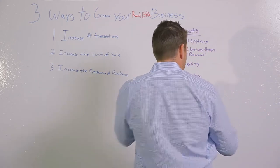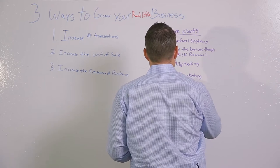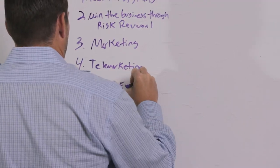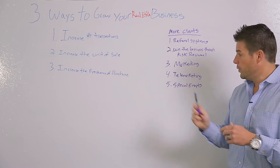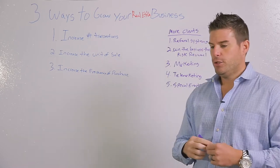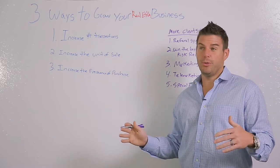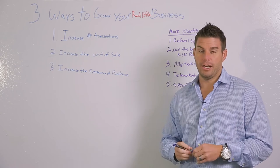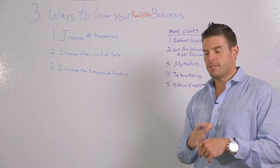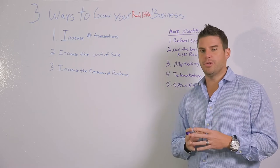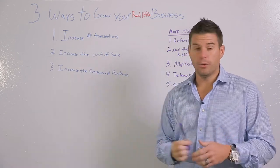The fifth way is special events. When it comes to doing special events, you could do open houses on steroids — put out a whole bunch of signs and drive 200 people. We had as many as 100 people attend an open house in Lawton, which is pretty impressive. You can do buyer seminars, seller seminars — all kinds of ways to use special events to acquire new customers, people that don't already know, like, and trust you.